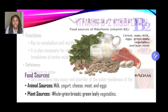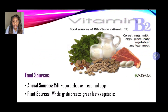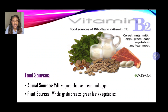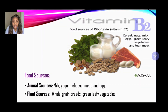Food sources of vitamin B2 or riboflavin: animal sources include milk, yogurt, cheese, meat, and eggs. Plant sources include whole grain breads and green leafy vegetables.